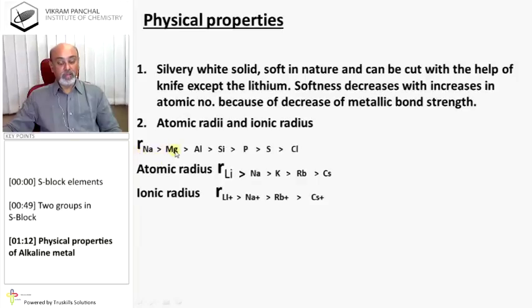Atomic radii and ionic radii: If you go from sodium to magnesium to aluminum to silicon, then atomic radius decreases in period. Now, in group, from lithium to cesium, atomic radius decreases.